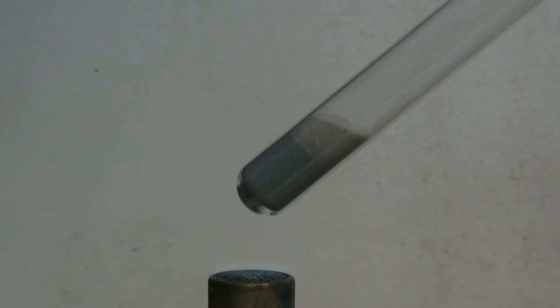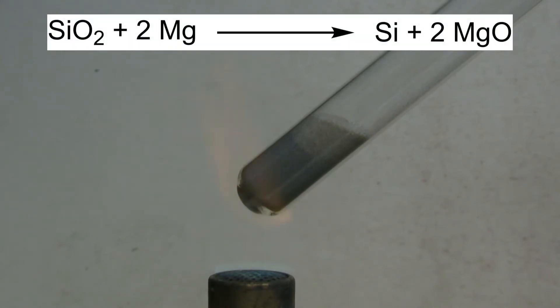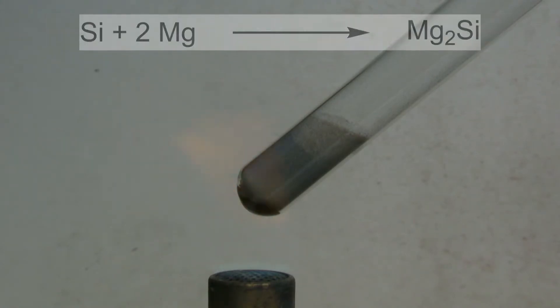The mixture is then heated with a Bunsen burner until a reaction takes place. The magnesium reduces the silicon dioxide and silicon and magnesium oxide are formed. The silicon reacts with additional magnesium to form magnesium silicide.